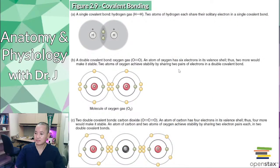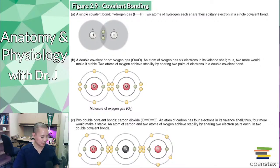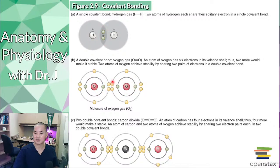With covalent bonds, here's a more detailed version of those same bonds. We have two hydrogen atoms sharing a pair of electrons, and here we have two oxygen atoms sharing two pairs of electrons — this is why it's a double covalent bond.